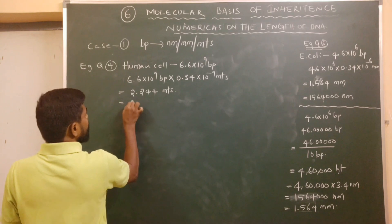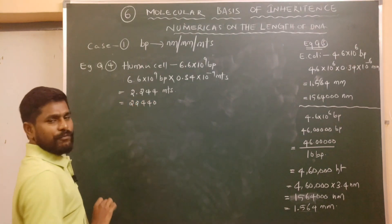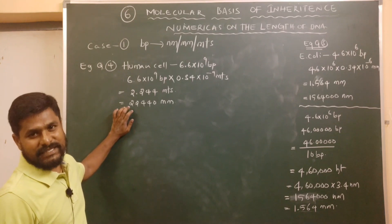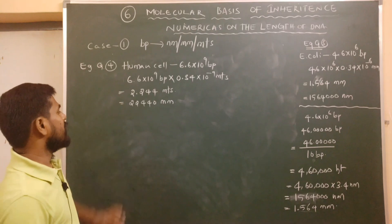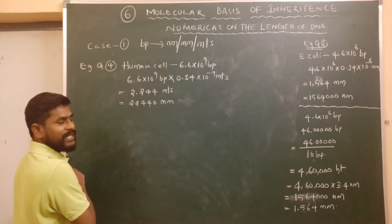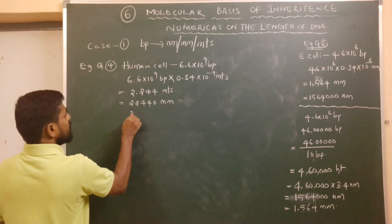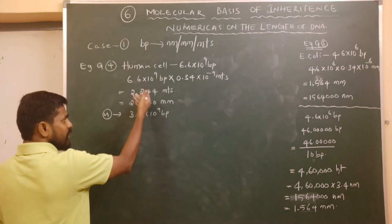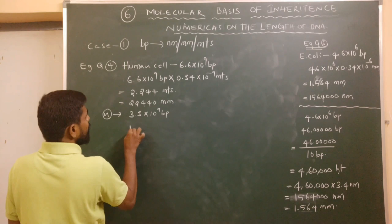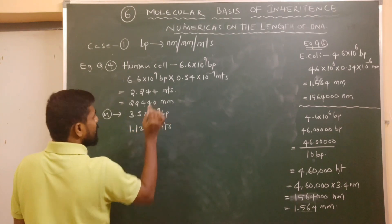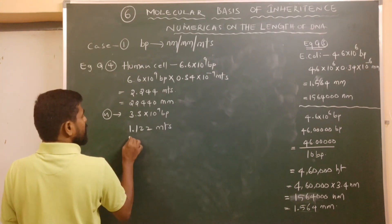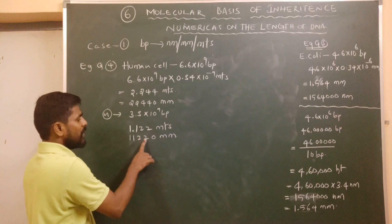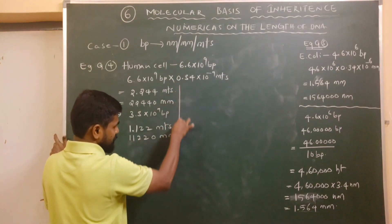For the haploid content, the length of haploid DNA is 3.3 × 10⁹ base pairs — half of the diploid. That gives simply 1.122 meters, or 11,220 millimeters. Let us also follow the indirect method, where you will get the number of helical turns.